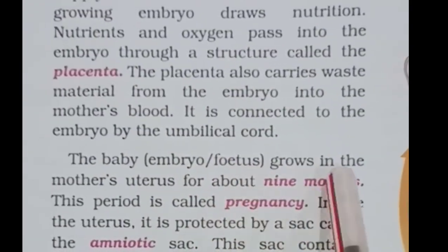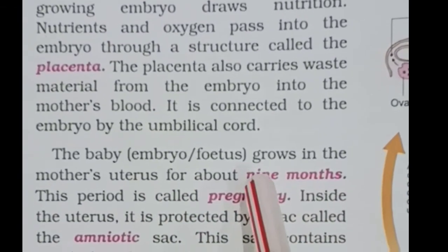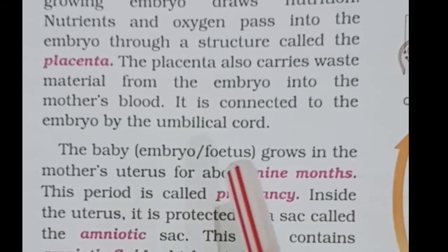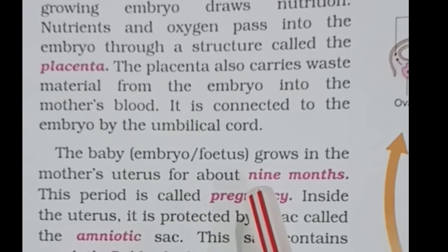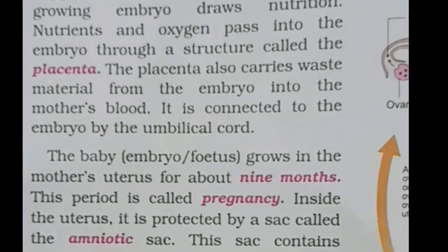The embryo or fetus grows in the mother's uterus for about 9 months, sometimes written as 9 months 10 days. This period from fertilization up to the birth of the baby is called the pregnancy period, also known as gestation (G-E-S-T-A-T-I-O-N). The fetus in the mother's womb develops its different organs and body parts before birth. Thank you — the next part we will see in another video.